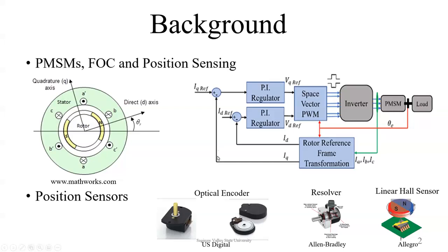In performing these controls, we do need a position sensor to have that high dynamic control. I am showing you three different types of sensors that are used. These sensors are mounted on the motor physically, and in mounting, there is some physical or mechanical assembly involved.